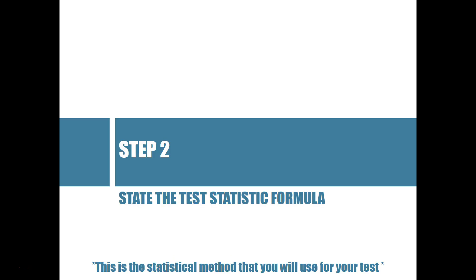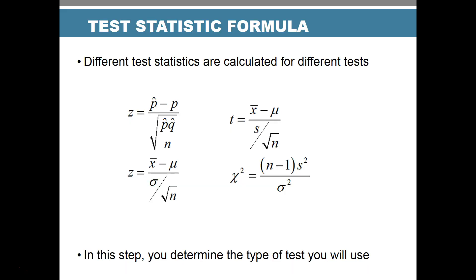Step two is the test statistic formula — the method we'll use for our test, such as a t-test, chi-square, or linear regression. We state the formula here. The choice of test depends on the type of data we have and what we want to study — whether we're looking at a relationship between two variables or differences between two groups.